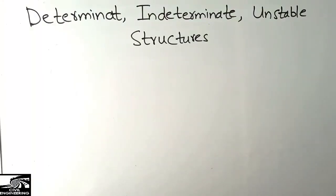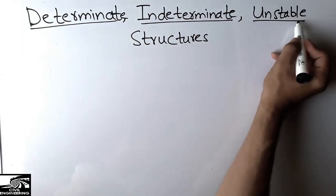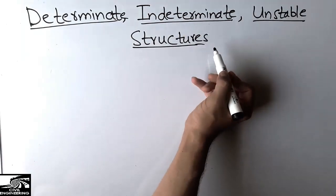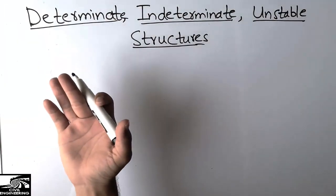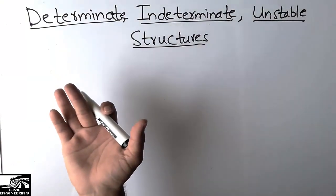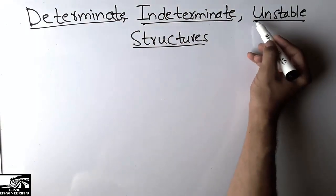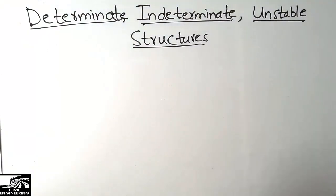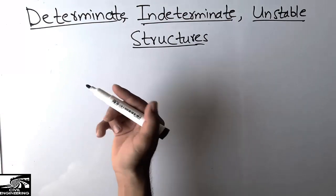Hello guys, welcome to the Civil Engineering YouTube channel. Please subscribe to our channel for more civil engineering updates. Today we are going to discuss some important types of structures: the determinate structure, indeterminate structure, and the unstable structures. How we can know what is a determinate structure, and how we can find whether a structure is determinate, indeterminate, or unstable.